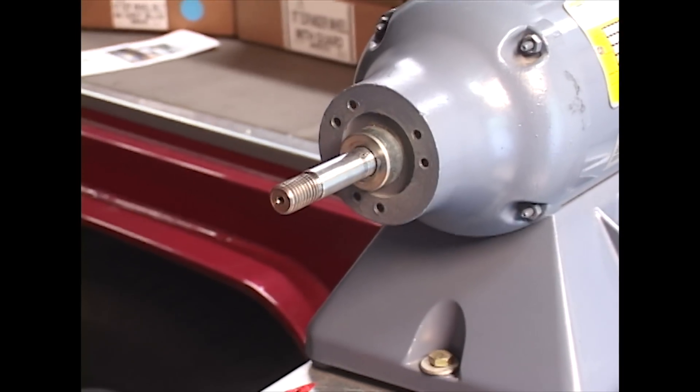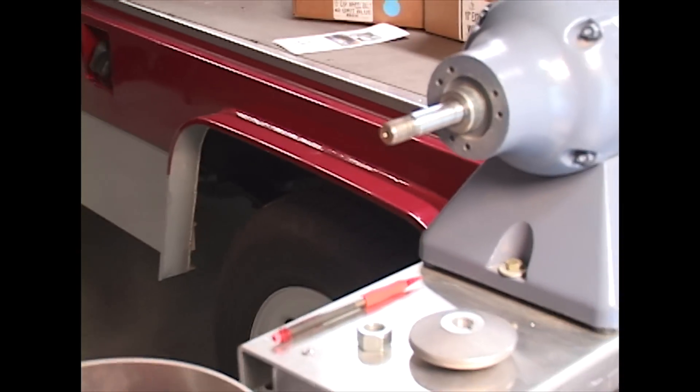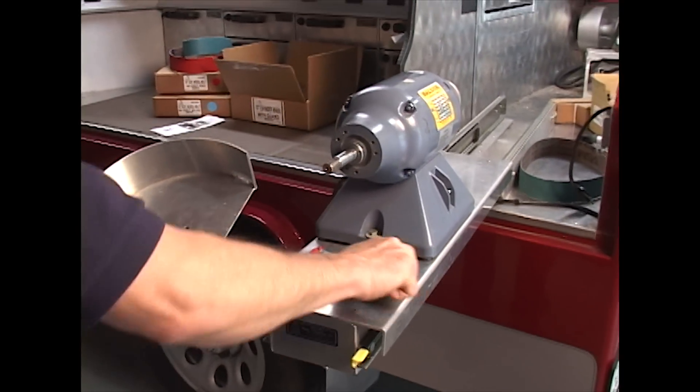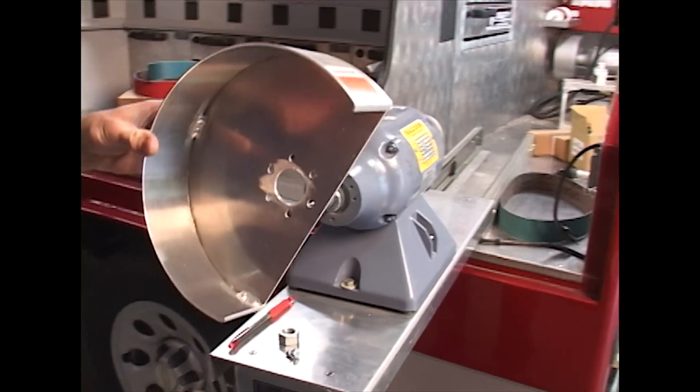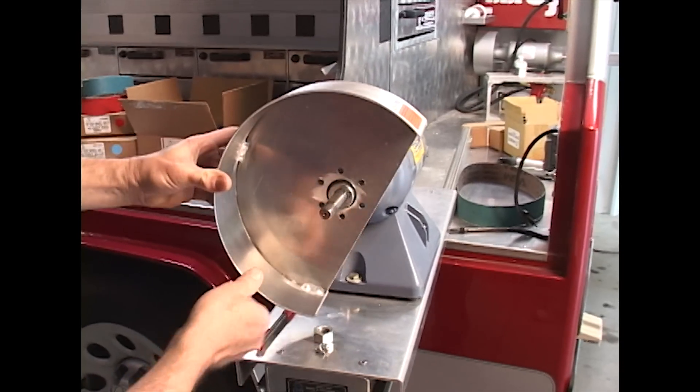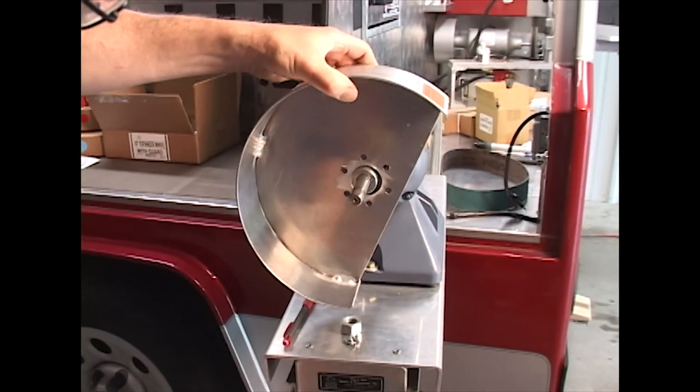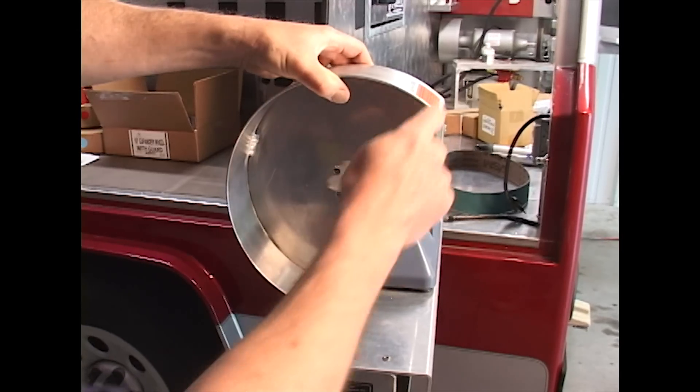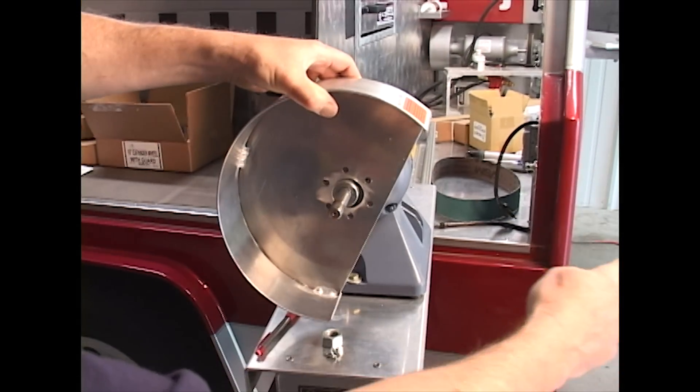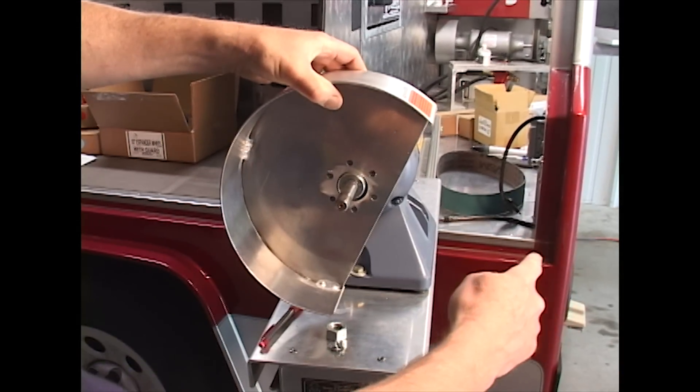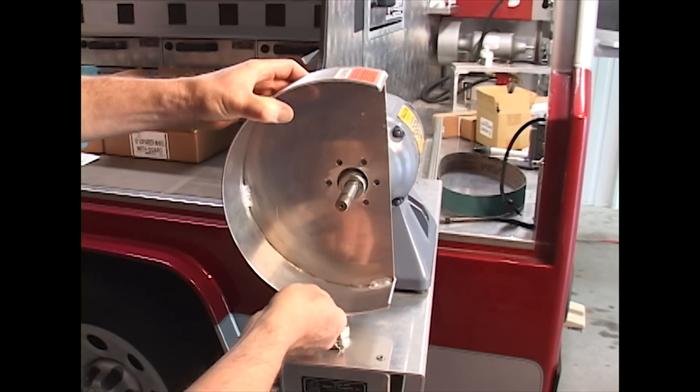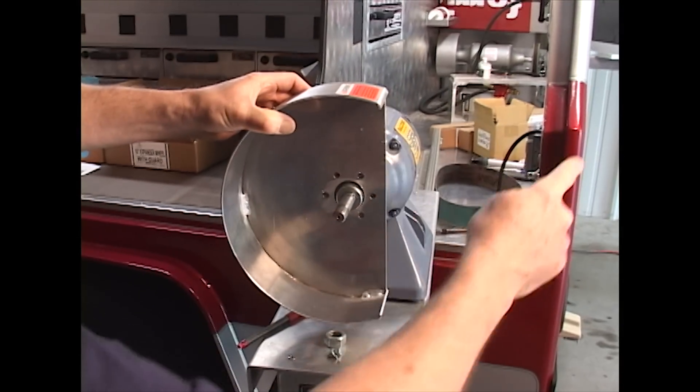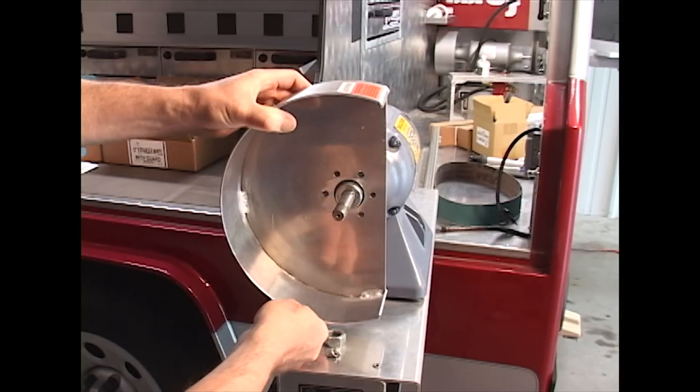We will first attach the guard to the grinder. We recommend that you attach the guard at about the one o'clock angle to protect your body from debris flying off the wheel. If you attach it like that, you will likely get stuff into your face. It's not a safe position.